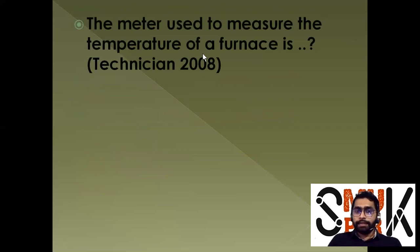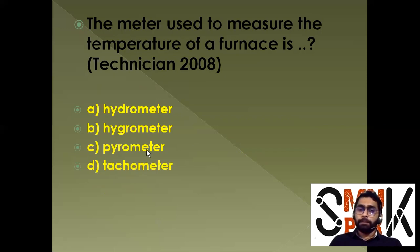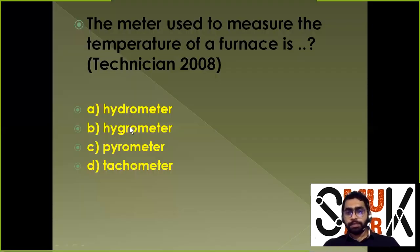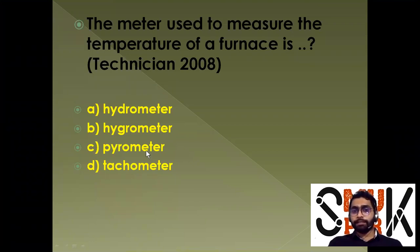The meter used to measure the temperature of a furnace: options are hydrometer, hygrometer, pyrometer, and tachometer. Hydrometer measures specific gravity or relative density; hygrometer measures humidity; tachometer measures speed. Pyrometer is used for measuring high temperatures such as in a furnace. Option C — pyrometer — is the correct answer.